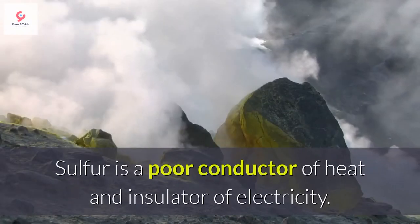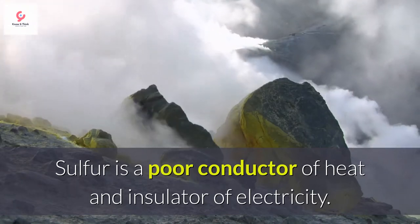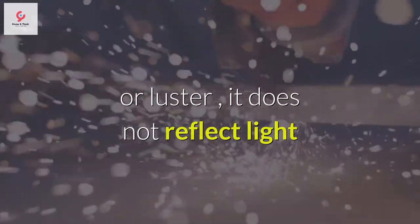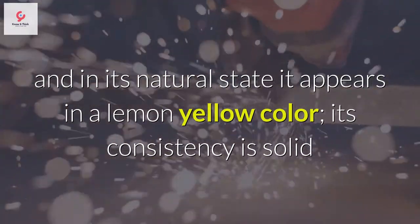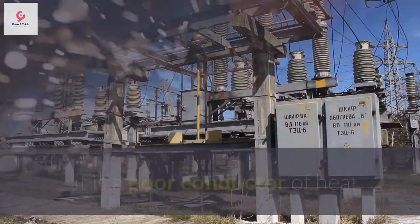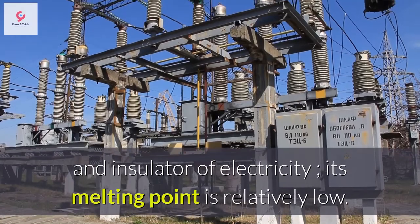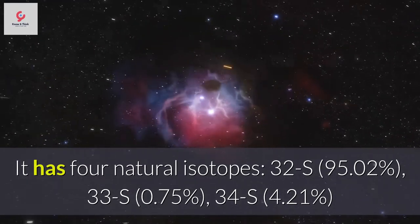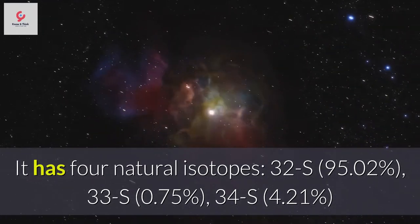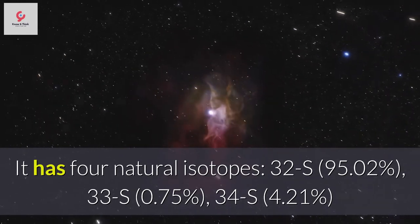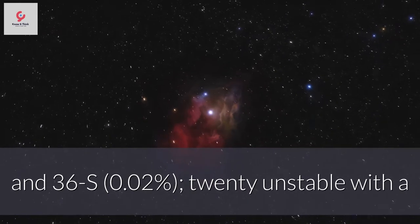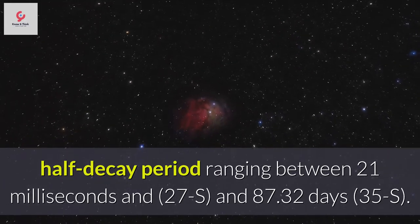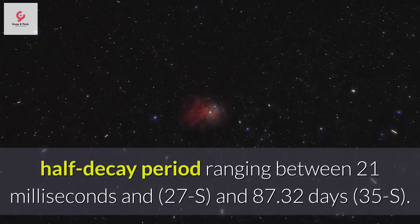As a non-metal on the periodic table, sulfur is a poor conductor of heat and insulator of electricity. It is characterized by not having shine or luster, does not reflect light, and in its natural state appears in a lemon yellow color. Its consistency is solid but soft and brittle. Its melting point is relatively low. It has four natural isotopes: 32S at 95.02%, 33S at 0.75%, 34S at 4.21%, and 36S at 0.02%, plus 20 unstable isotopes with a half-decay period ranging between 21 milliseconds and 87.32 days for 35S.